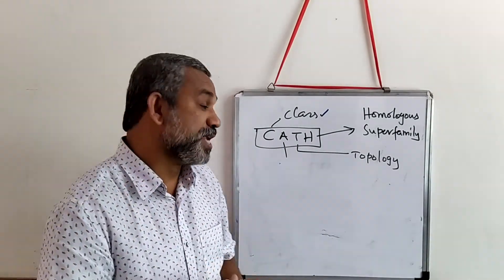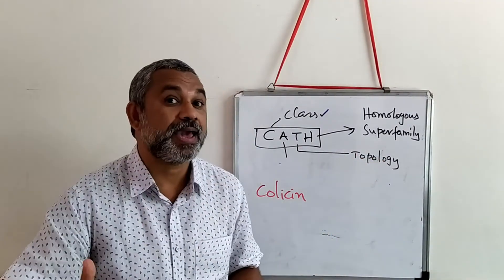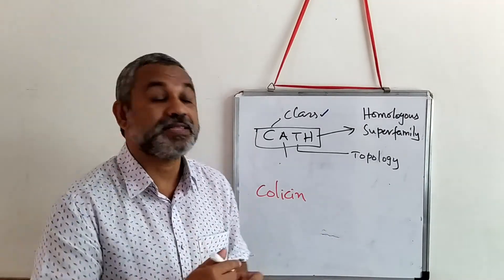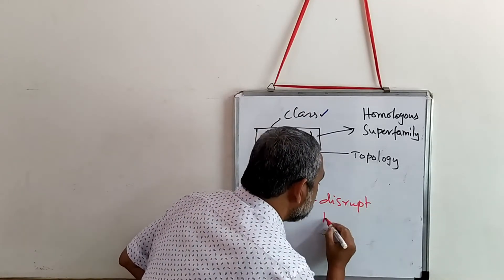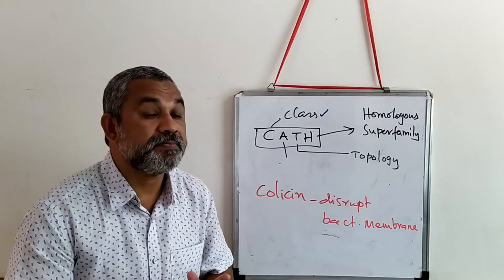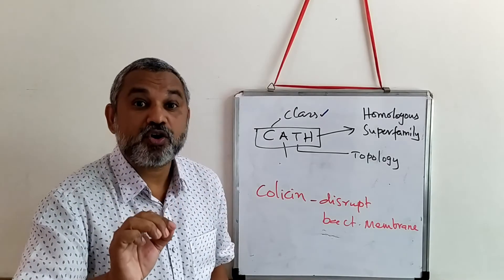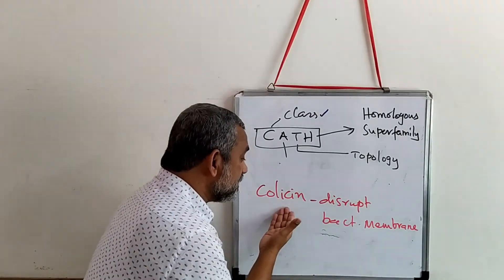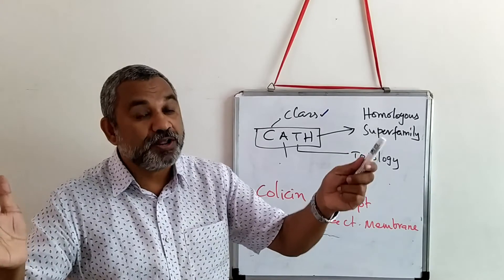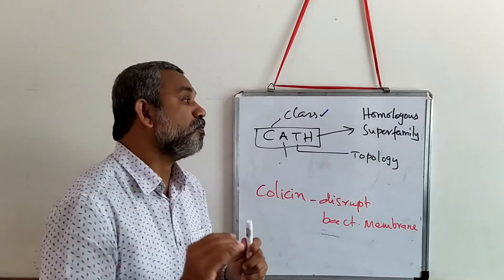Let us compare with a very good example — colicin. Colicin has the same topology as the globin fold, same topology. But colicin is used for disrupting the bacterial membrane. So we have seen it has the same structural fold like the globin fold, but in hemoglobin and myoglobin the function is different, whereas colicin can disrupt the bacterial membrane. You see — same fold but carrying out two different functions. Therefore these can be pulled under topology but not under Homologous Superfamily.